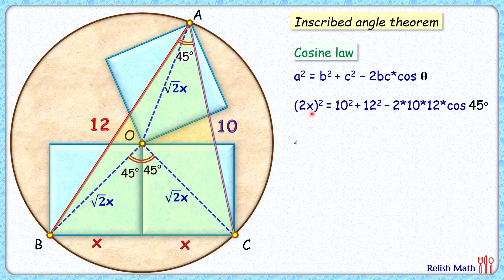Solving it you'll get 4x² = 100 + 144 - 240, and cos 45° is 1/√2. Simplifying further we'll get 4x² = 244 - 120√2.